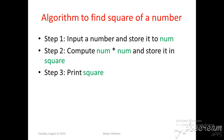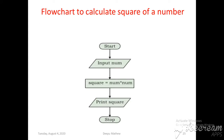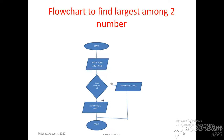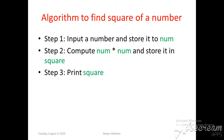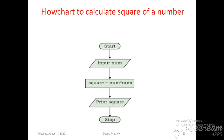The second step is to input a number and store it in 'num'. Since we take input from the keyboard, we use the parallelogram symbol for input: 'Input num'. The third step is to compute num multiplied by num and store it in the square variable. All operations are written inside the rectangle box.